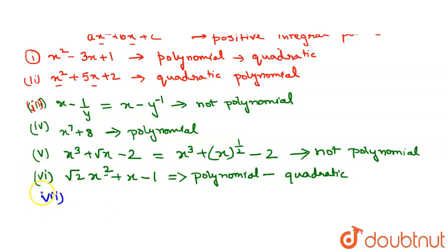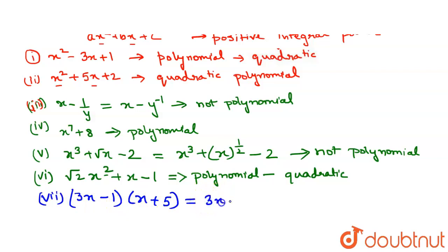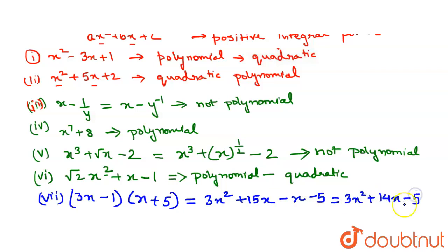Question 7 is (3x minus 1)(x plus 5). Let us open the brackets: 3x multiplied by the expression gives 3x squared plus 15x, and minus 1 multiplied gives minus x minus 5. Simplifying, we get 3x squared plus 14x minus 5. All powers are positive integral, so this is a quadratic polynomial.